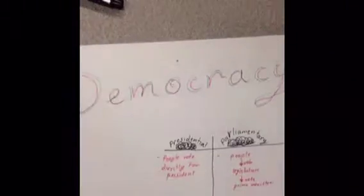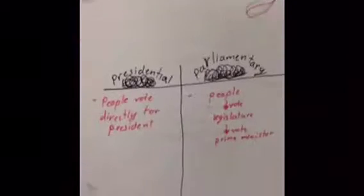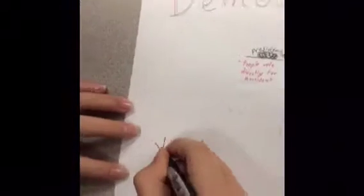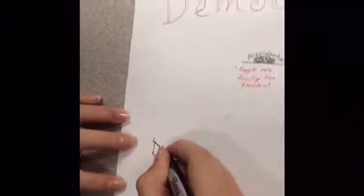Democracy is the best way to go for government. A democratic government is a type of citizenship where the people get to vote. There are two kinds of democracies, presidential and parliamentary.